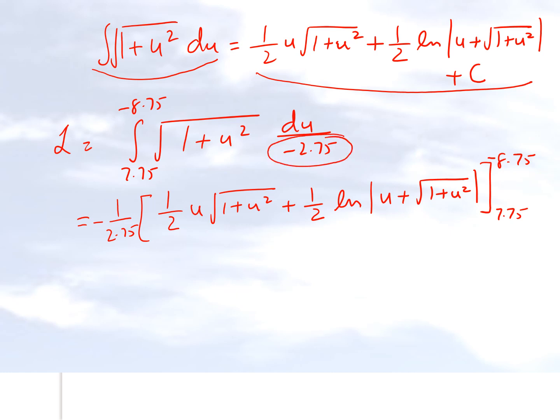I'm taking this quantity here and taking it outside. I get minus 1 divided by 2.75. At minus 8.75, this value is minus 38.53, and this quantity is minus 1.433. Then we subtract what we get at the lower limit, which is 7.75.